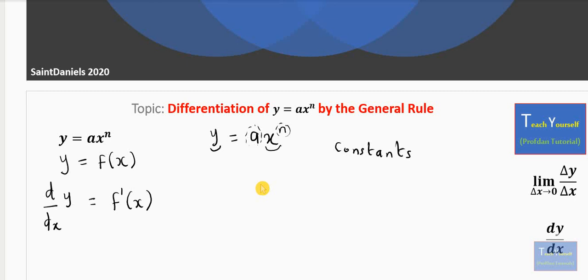It's any given number - constants. So how do we differentiate this? By the general rule, dy/dx is going to give us the constant a. The power n, which is also a constant, will be leveled. Then you have the variable x decreasing the power. This is the general rule of differentiation.